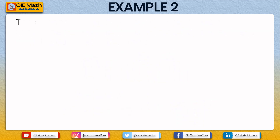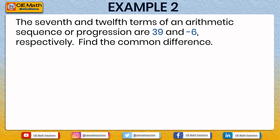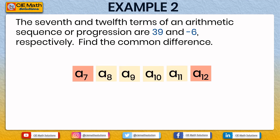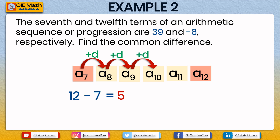Let us have another example. The 7th and 12th terms of an arithmetic sequence are 39 and negative 6 respectively. Find the common difference. To illustrate this, we have A7, A8, A9, A10, A11, and A12. Subtracting their orders, 12 minus 7 equals 5, meaning there are 5 d's added from A7 to A12, which we can verify by listing: A7 plus d equals A8, A8 plus d equals A9, A9 plus d equals A10, A10 plus d equals A11, and A11 plus d equals A12.